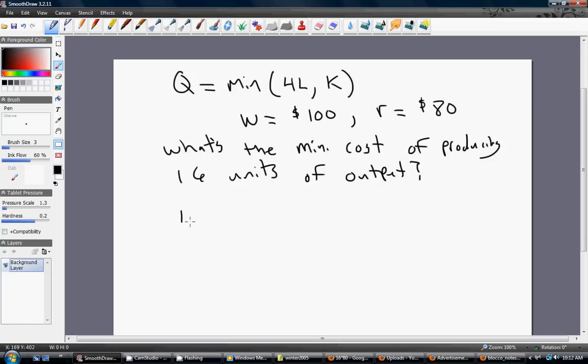So let's first find the optimal input mix. Well, L star equals 16 over 4 equals 4, so we want to use 4 workers. And how many units of capital? Here, B is just 1, so 16 divided by 1 is just 16. So the optimal input mix calls for using 4 units of labor and 16 units of capital.